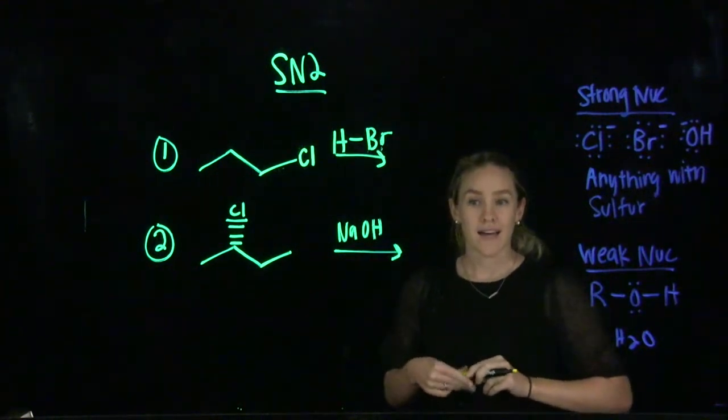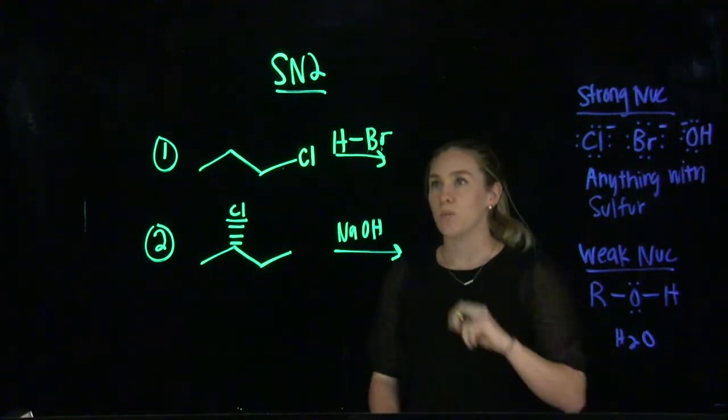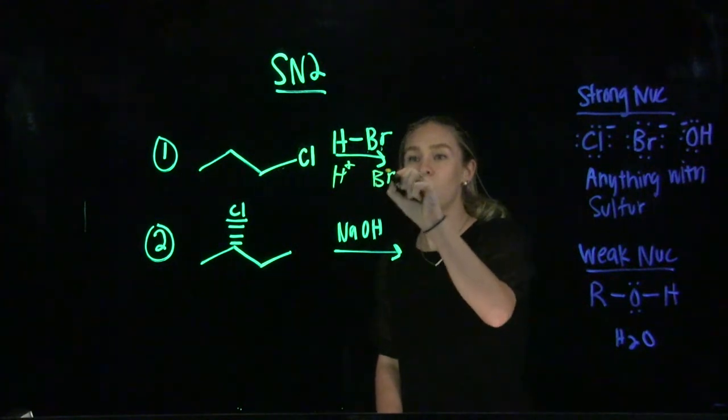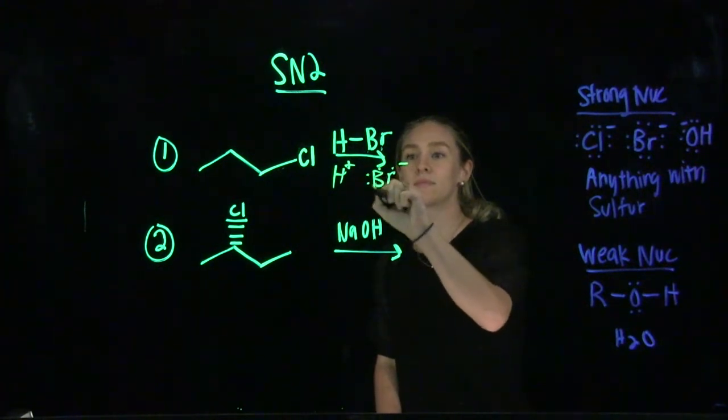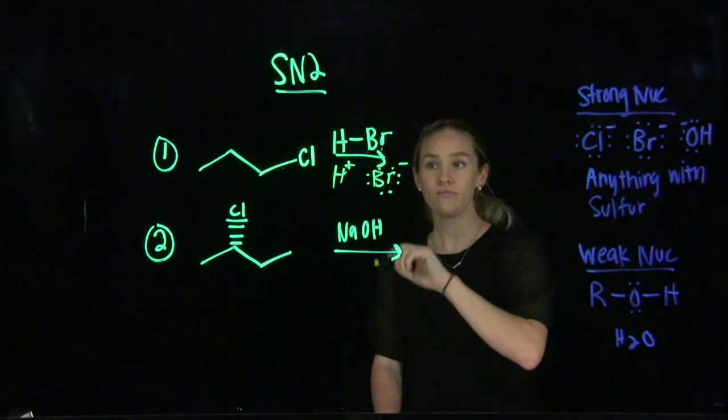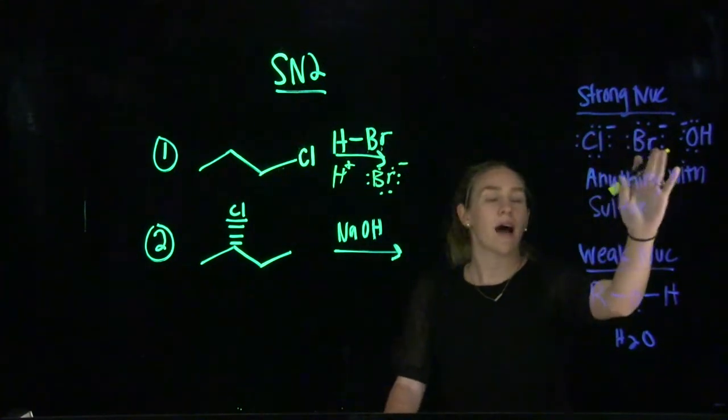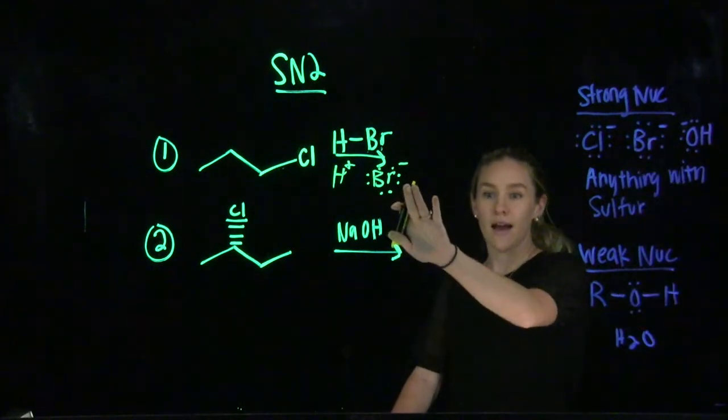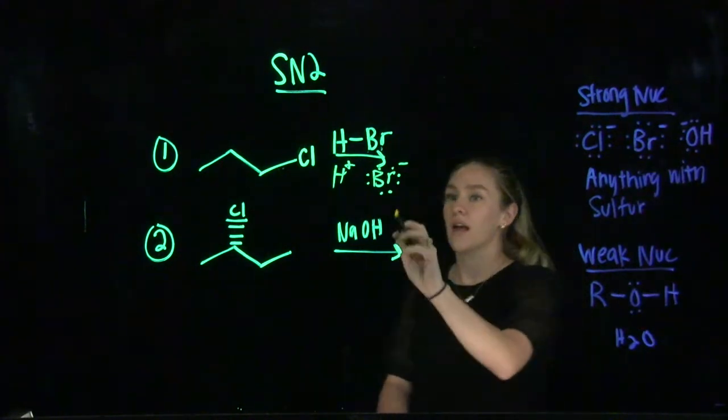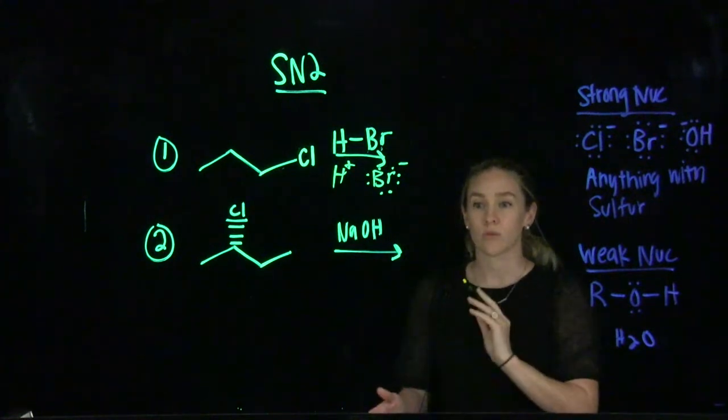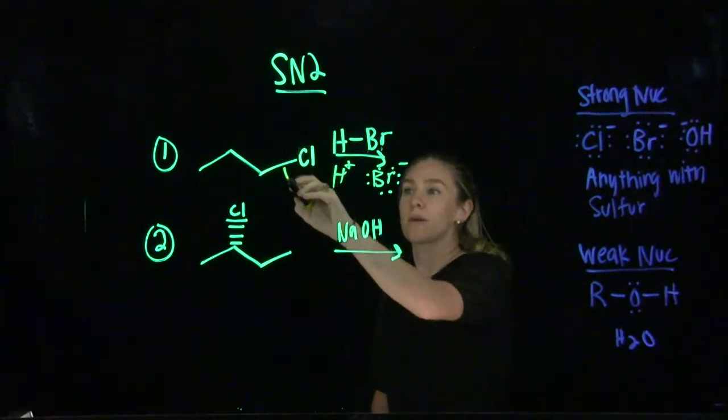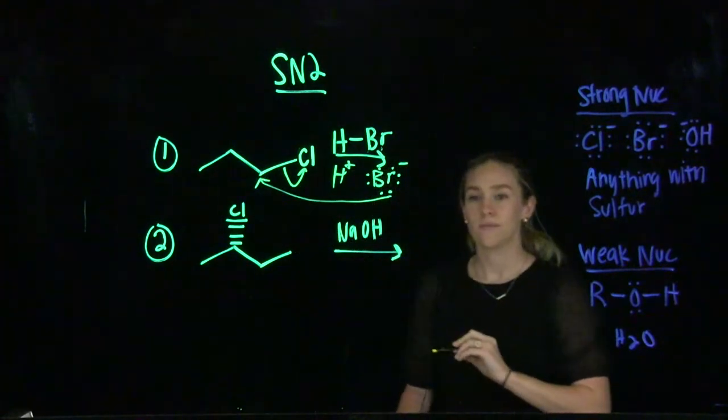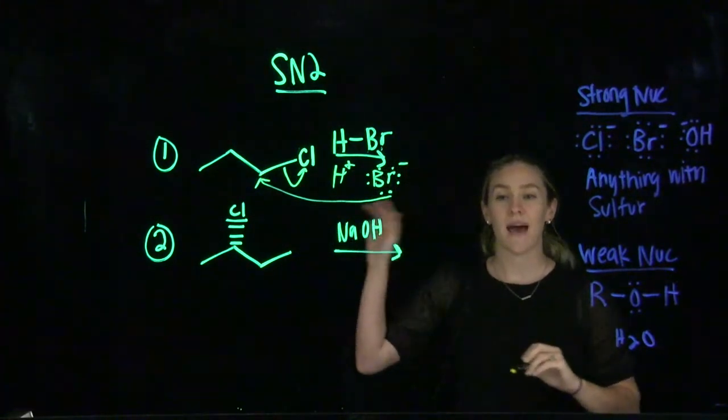HBr is a strong acid. That means it is going to break up into its components H plus and Br minus. Looking at our list over here, we know that a bromide ion is a very strong nucleophile. So this ion right here is going to be our nucleophile. Because SN2 is a concerted process, our leaving group is going to leave as the nucleophile attacks the electrophile. Both of these arrows are going to happen at the same time.